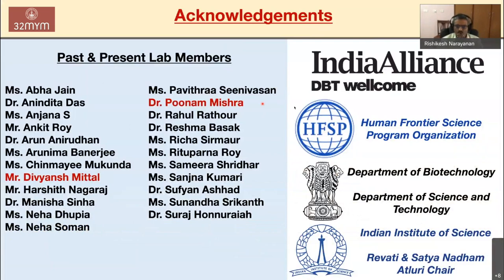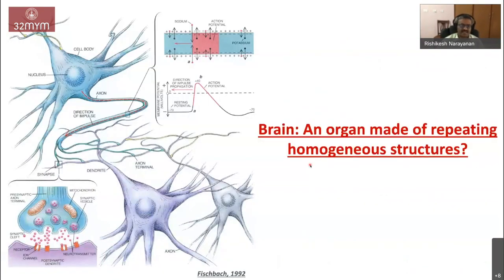Among the several dogmas about the brain, one general dogma is that the brain is an organ made of repeating homogeneous structures — simple computational units that are present in these repeating homogeneous arrangements, and the system functions because of the connectivity associated with it. But if you look at the biology and ask whether this assumption is really true, it turns out that across brain regions, the neurons are very heterogeneous. There are structural heterogeneities across different brain regions, and there are different types of cells present in different brain regions.